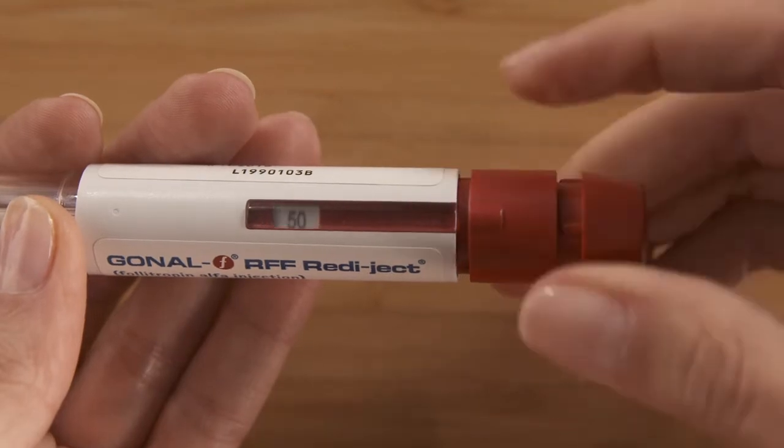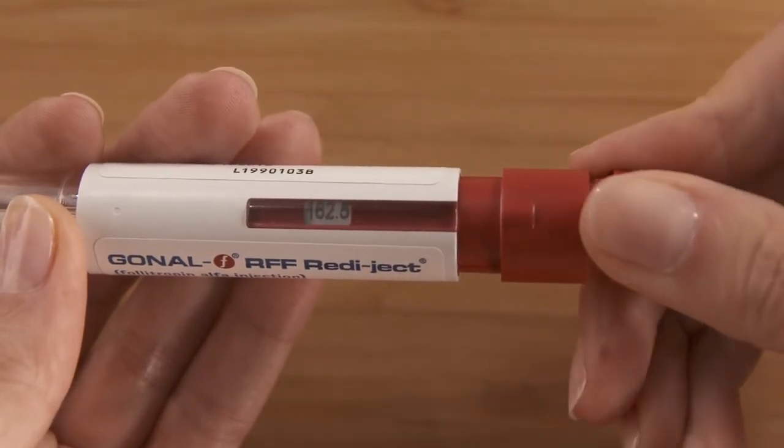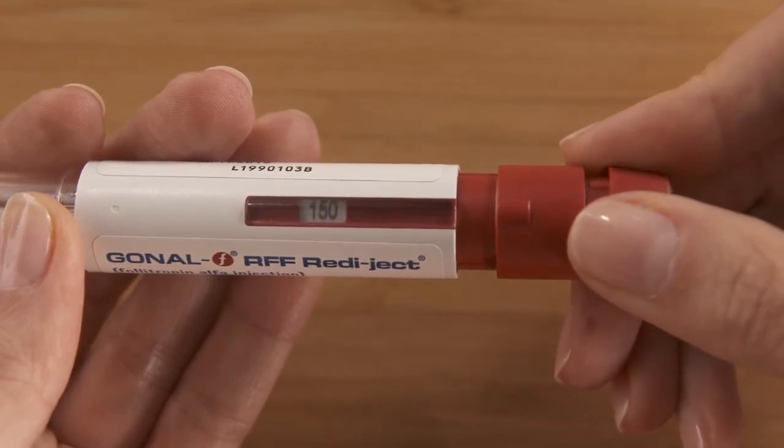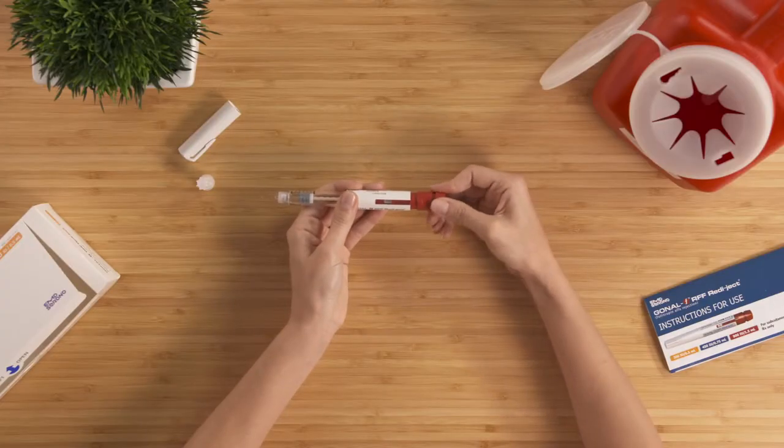Turn the dose knob until your intended dose shows in the dose information display. This is an enhanced feature of the Readyject pen with an updated display for clear legibility. If needed, you can turn the dose knob backward if you turn it past your intended dose.